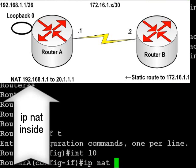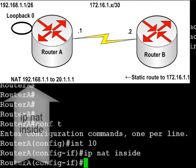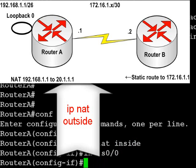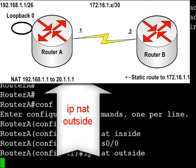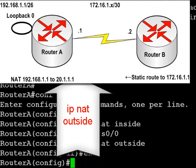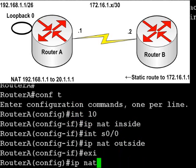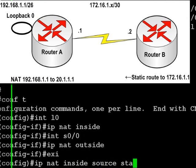We're going to add the command IP NAT inside to interface loopback 0, which I've shortened to L0 on the config. On interface serial 0/0, I'm adding the IP NAT outside command. If I see anyone making mistakes, it's normally missing off one of those two commands, so NAT won't work if you don't have both of those.